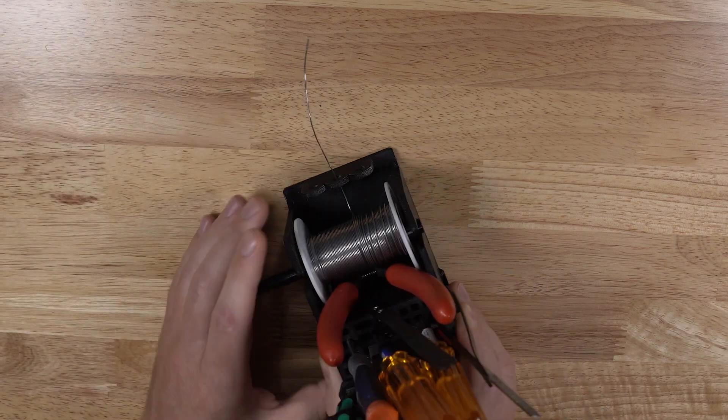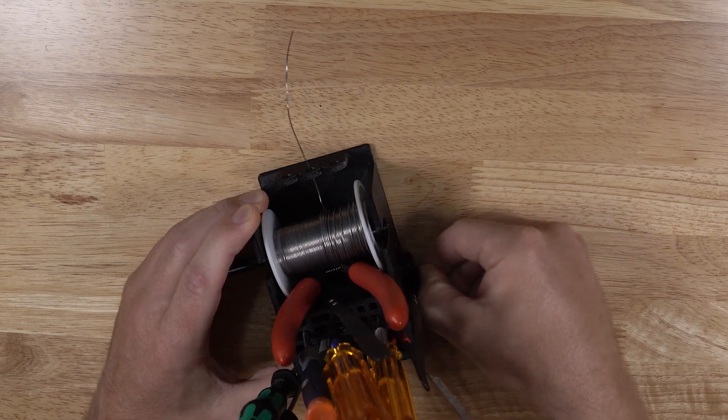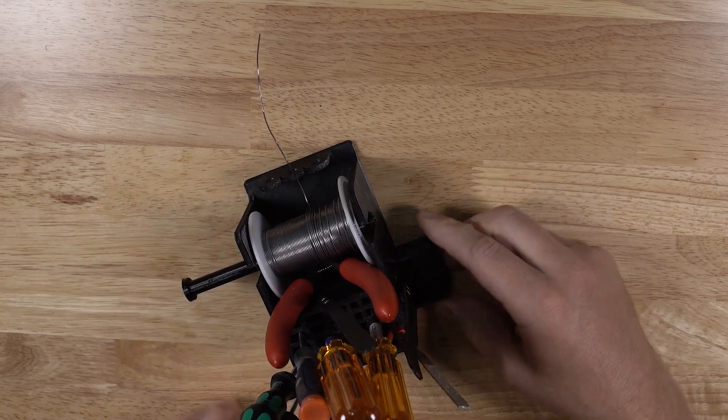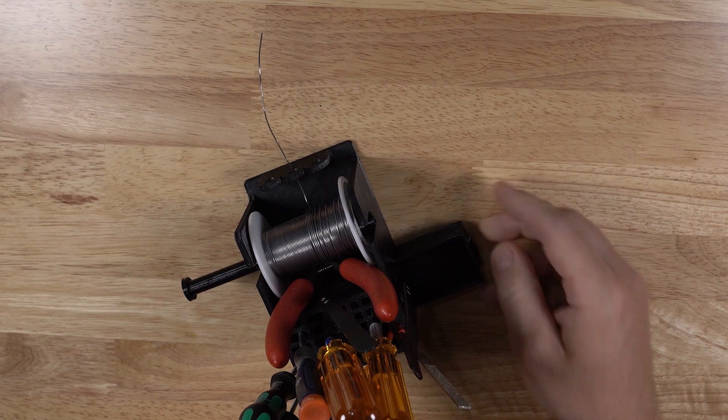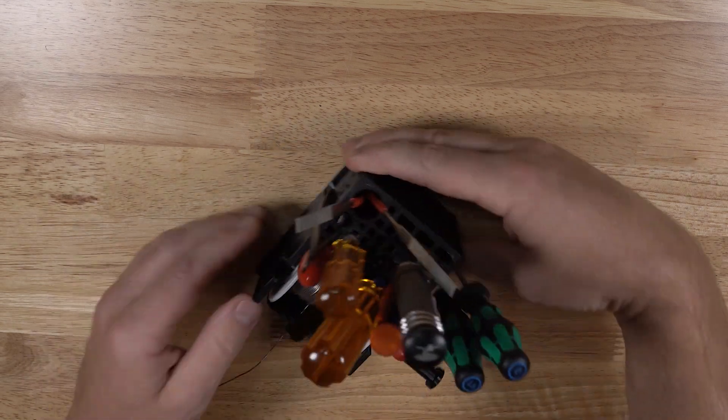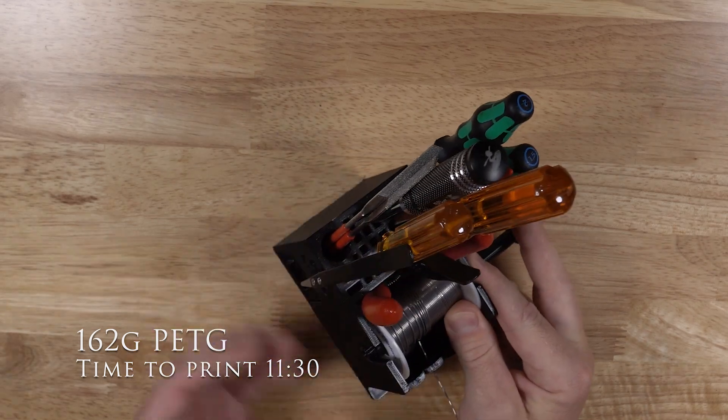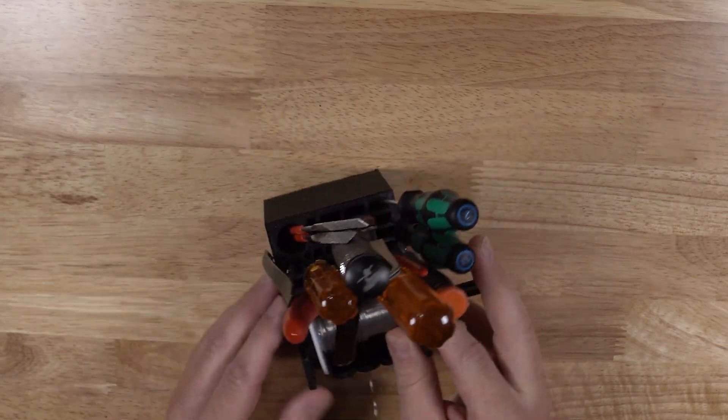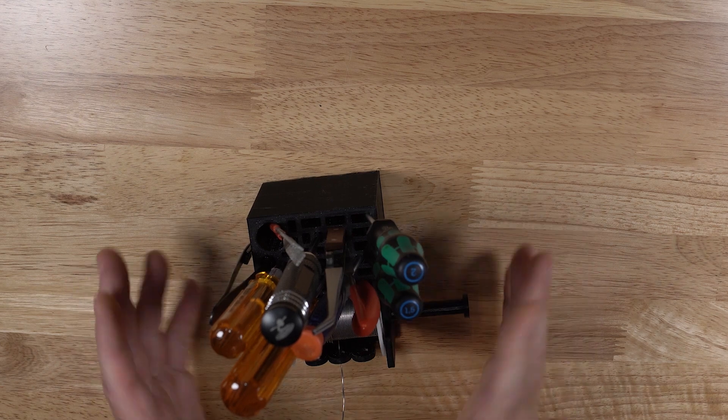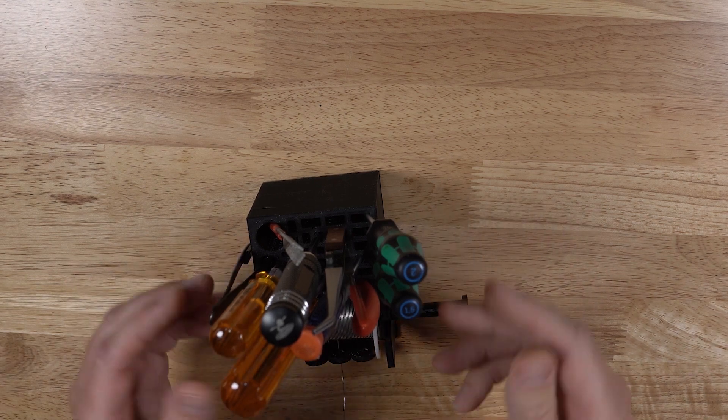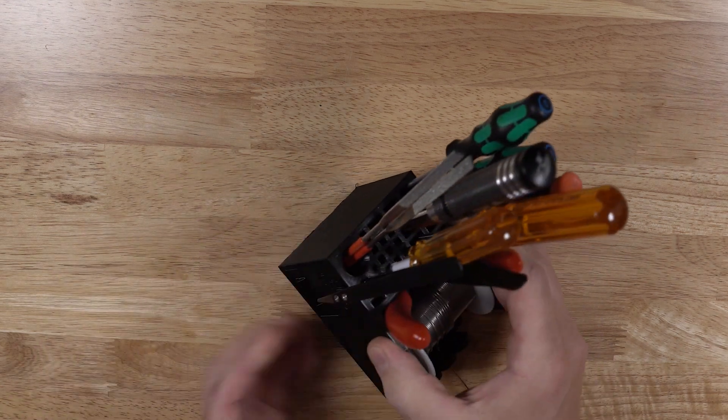Also holds a roll of solder. Solder makes that nice and easy to work with. And there's a nice little drawer here on the side, nice for storing like extra solder tips if you need them. This print takes about 162 grams of filament. This is all printed in PETG and about 11 and a half hours of print time.